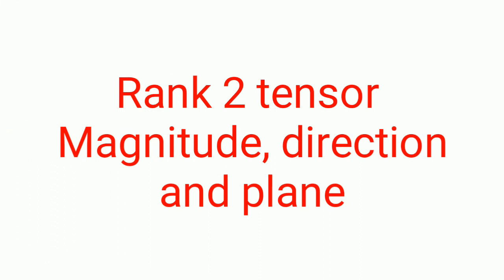Now coming to rank 2 tensor — stress is termed to be the rank 2 tensor, because it has magnitude, direction, and also the plane where it is acting upon. That is, it consists of tensor quantity. So stress, strain, and permeabilities etc. are termed to be the rank 2 tensor.